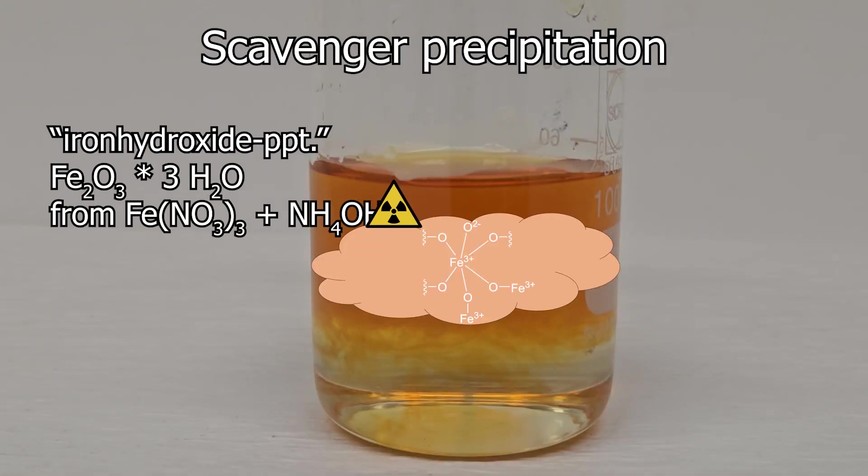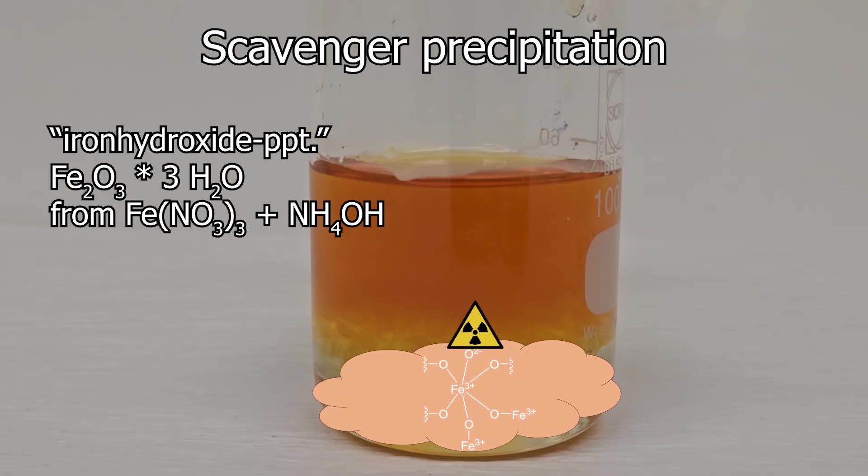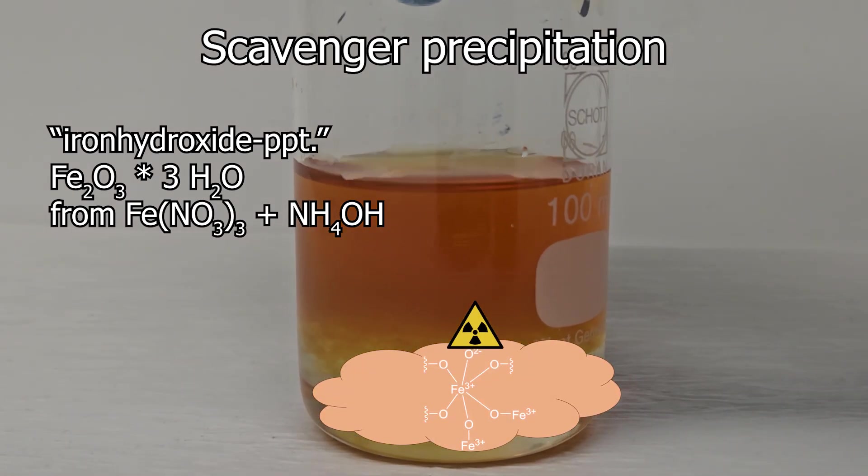And the oxide ions can now pull other metal cations into the precipitate. And in this case, it's now all radionuclides. The radionuclides are adsorbed onto the precipitate. This is not very specific, but it's great if you have to decontaminate water, for example.